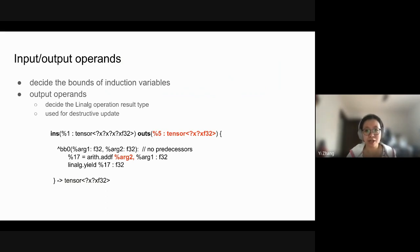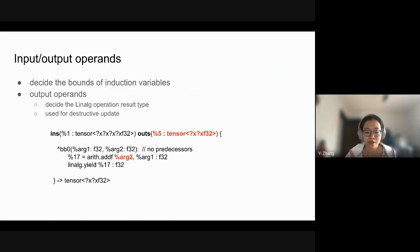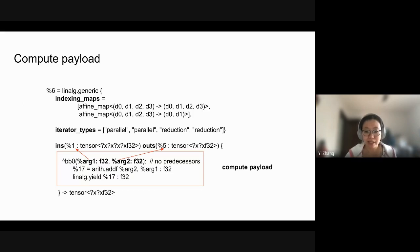The output tensor also has another functionality: destructive updates. Sometimes we need to carry a result from one iteration to the next. In that case we use the output tensor to achieve this — the add result gets stored back into the output tensor through the yield so it can be carried forward and seen in the next iteration.